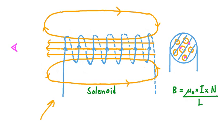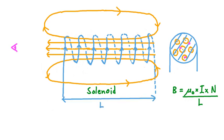In the solenoid we've sketched on screen, capital N would be equal to 1, 2, 3, 4, 5, 6, 7 — since we have 7 turns — and L, the solenoid's length, would be equal to this distance right here. Those are the values we would use in this equation to calculate the strength of the magnetic field inside the turns of the solenoid.